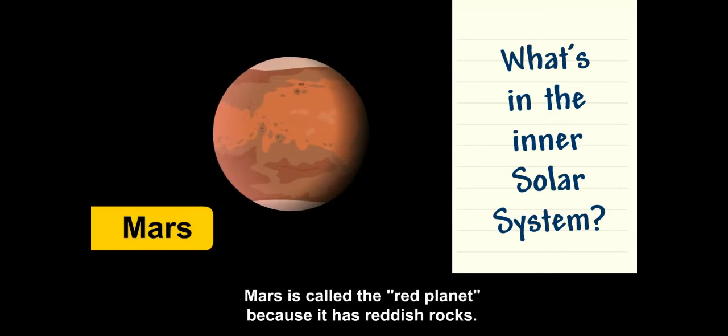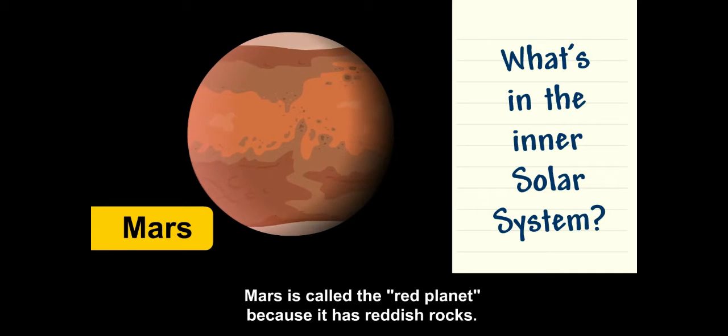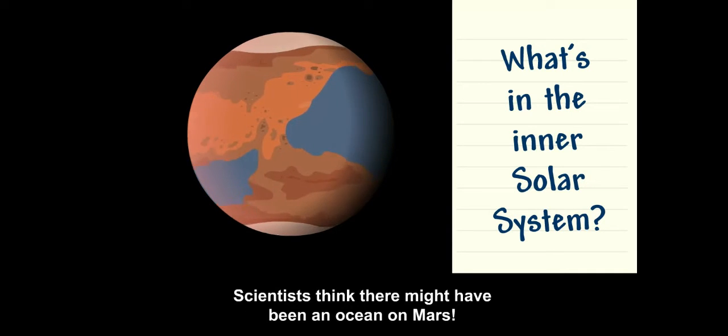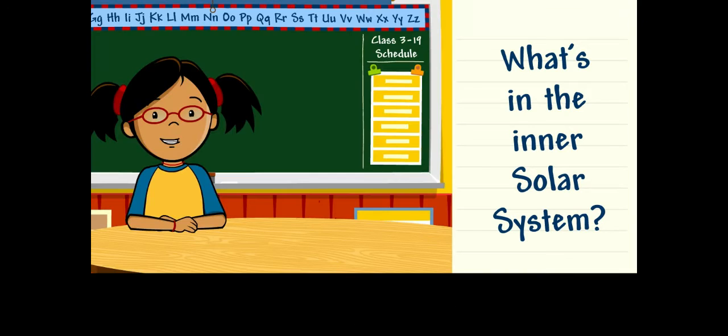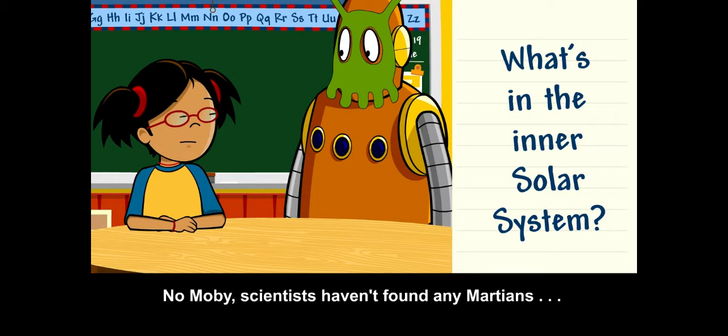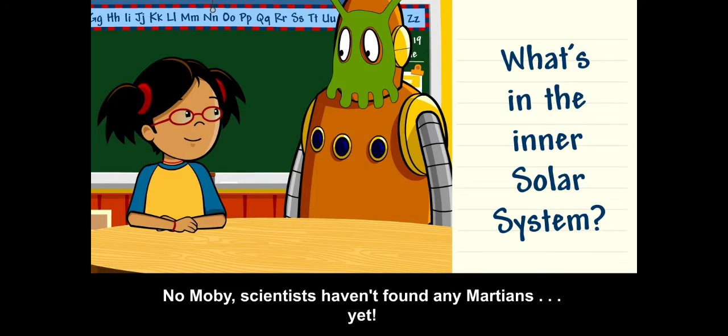Mars is called the red planet because it has reddish rocks. Scientists think there might have been an ocean on Mars. No, Moby, scientists haven't found any Martians. Yet.